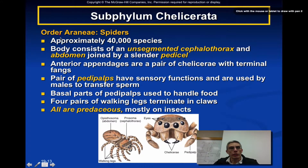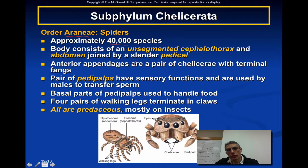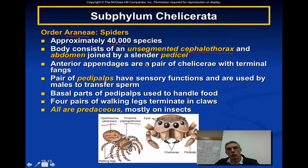The first order we're going to look at is the order Araneae — specifically the spiders. There are about 40,000 species of spiders, and the body consists of an unsegmented cephalothorax, also called the prosoma, and an abdominal region, also called the opisthosoma. They're going to be joined by a very slender pedicel located between those two regions.